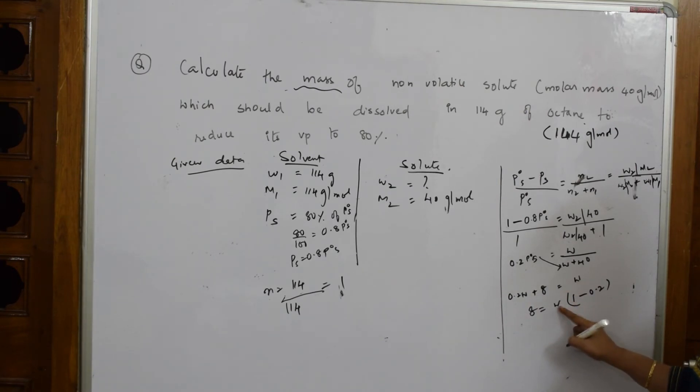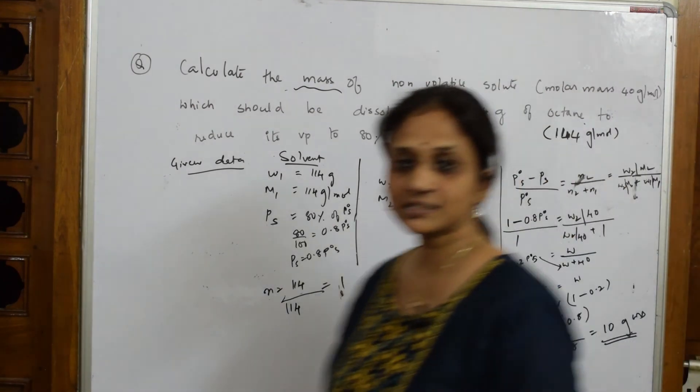Therefore, w = 8/0.8 = 10 grams. That's it - the answer is 10 grams.